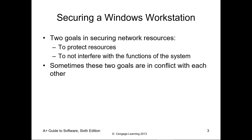Securing a workstation. There are two primary goals for securing a workstation: to protect a resource or asset, and to not interfere with the function of the overall system. For example, we can secure a computer system by locking it in a closet and never having it hooked up, but realistically how could we use it? Sometimes these two goals are in conflict, but our goal is to keep resources always available while still providing adequate levels of protection.